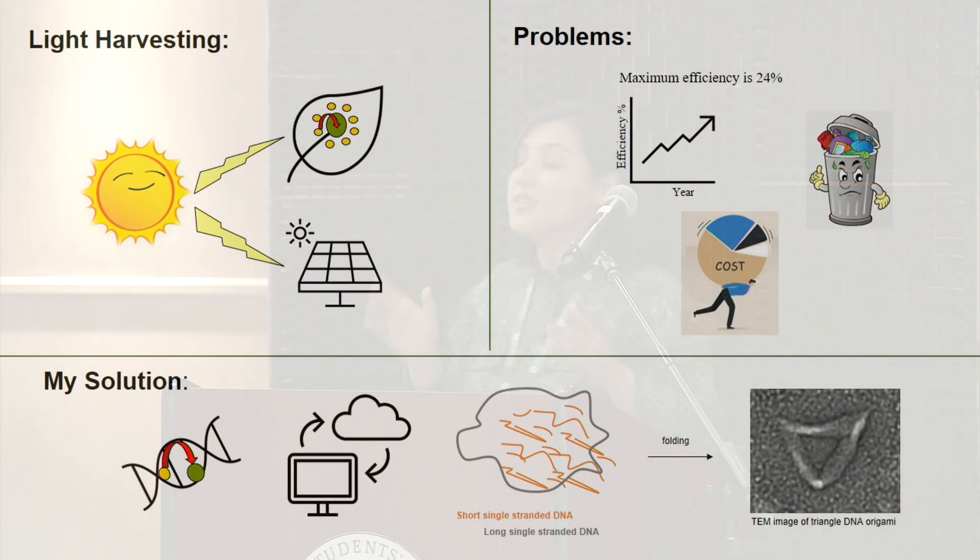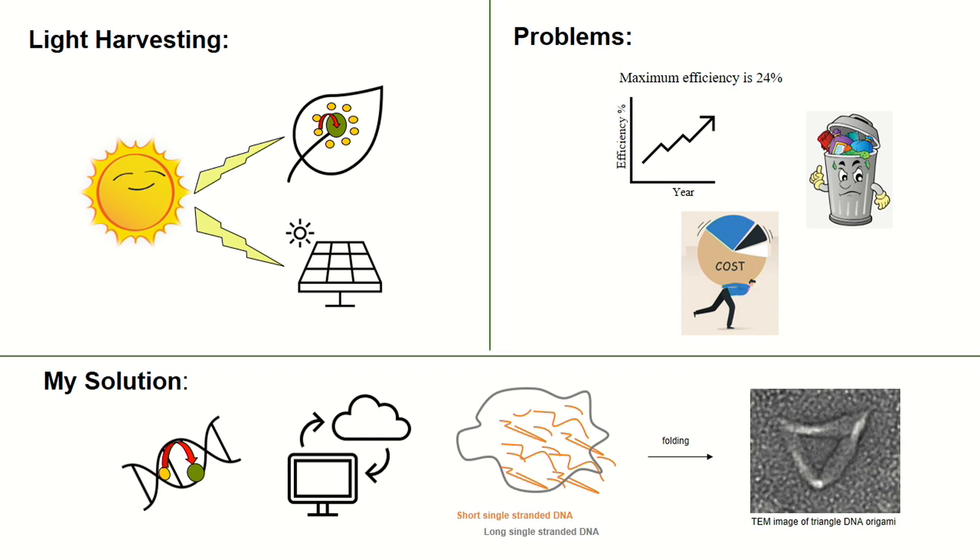One approach we are using DNA origami for is to increase efficiency of solar panels, because we can precisely control the distance and arrangement of chromophores which are deposited onto DNA origami. In addition, DNA is highly stable, which means we can create highly stable and durable light harvesting devices because DNA is stable and resistant to degradation.